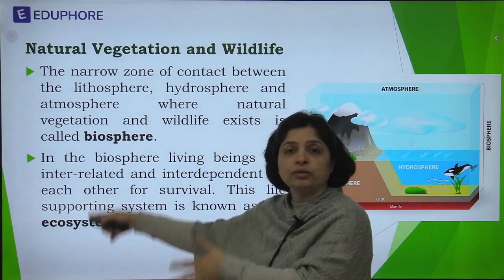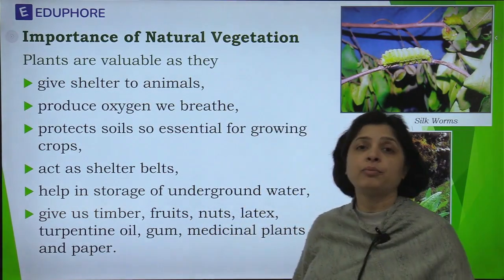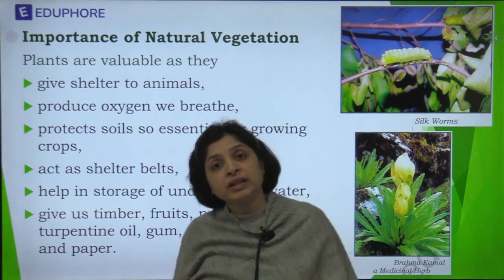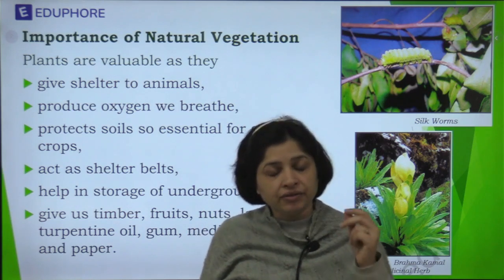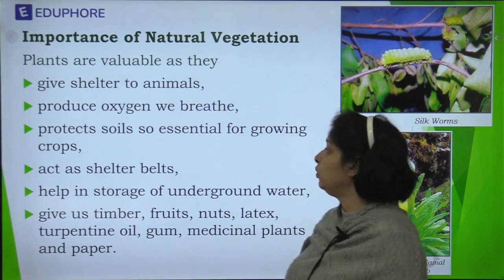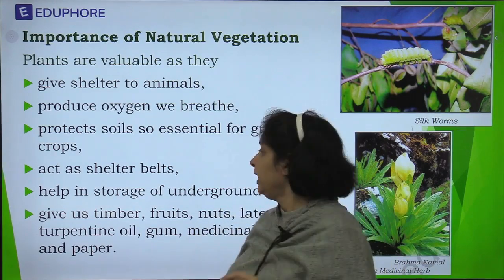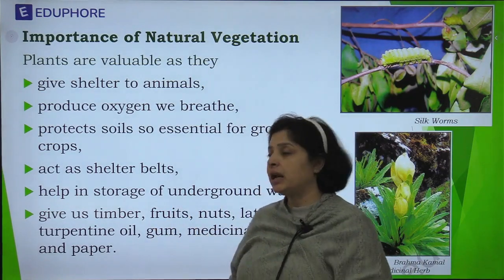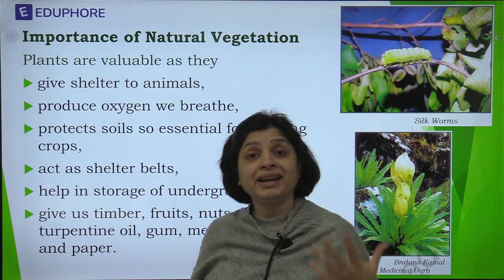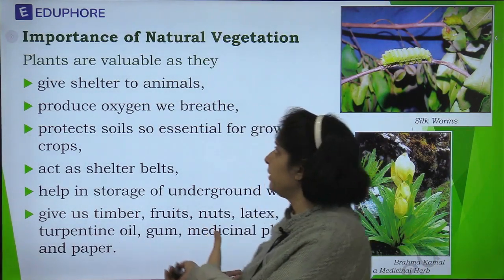Plants are important because they are the natural habitats that provide shelter to animals. Through photosynthesis they generate oxygen, which is very useful for all living communities. They protect soil so that soil erosion is checked. They act as shelter belts that check wind velocity and prevent soil erosion. They help in recharging underground water tables. And a variety of products are obtained from forests — timber, gums, resins, medicinal plants, different types of nuts, rubber, and oils.